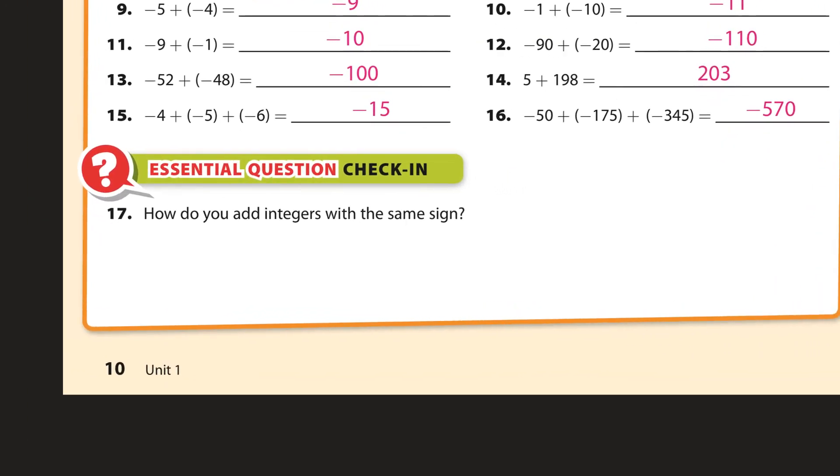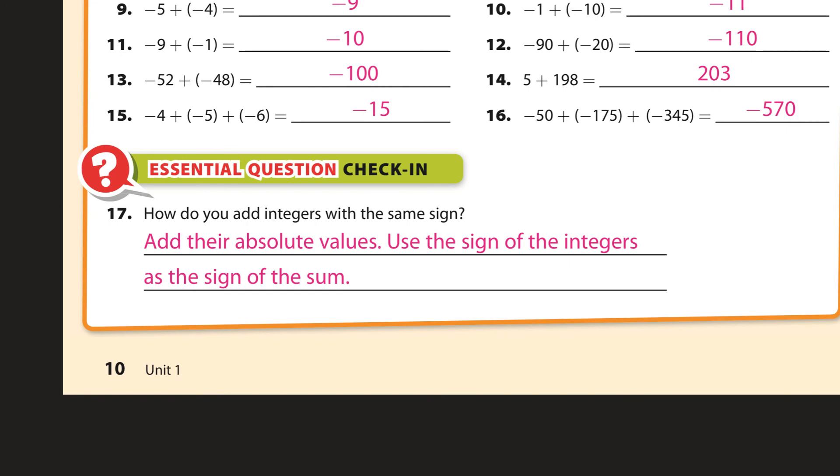And finally, how do you add integers with the same sign? Well, I like to just add up your numbers, which they might call absolute values. Add their absolute values. And what they're saying in absolute values is this: if you have negative 4 plus negative 5, I've been telling you just add up your numbers, 4 plus 5, that's 9, and keep that negative sign. Well, what's really happening here is when you add the numbers, we're really looking at the absolute value. So the absolute value of negative 4 is 4, and the absolute value of negative 5 is 5. So if we add up their absolute values, 4 plus 5 is 9. And then we use the sign of the integers as the sign of the sum. So the sign was negative, so we do that. Boom, boom. So I hope this has been helpful, and thanks for watching.